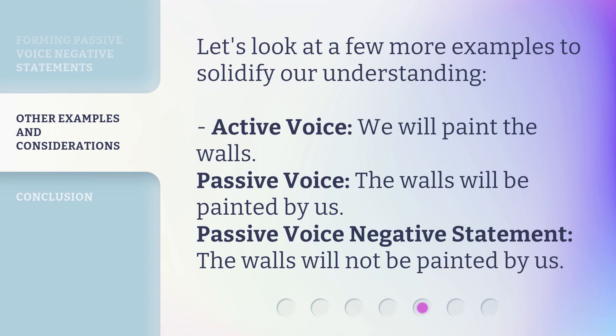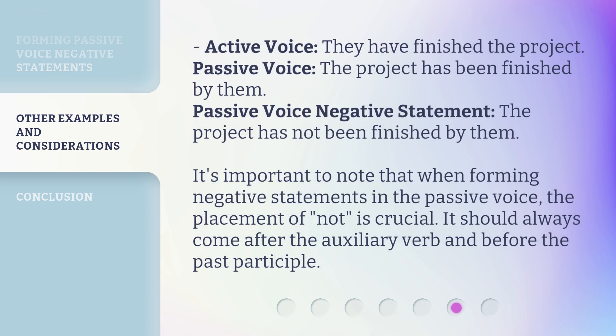Let's look at a few more examples to solidify our understanding. Active voice: 'We will paint the walls.' Passive voice: 'The walls will be painted by us.' Passive voice negative statement: 'The walls will not be painted by us.' Active voice: 'They have finished the project.' Passive voice: 'The project has been finished by them.' Passive voice negative statement: 'The project has not been finished by them.' It's important to note that when forming negative statements in the passive voice, the placement of 'not' is crucial — it should always come after the auxiliary verb and before the past participle.